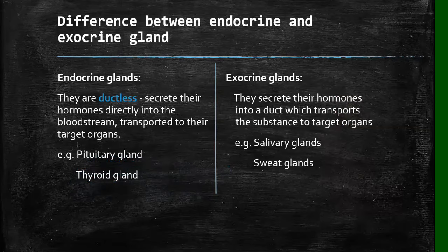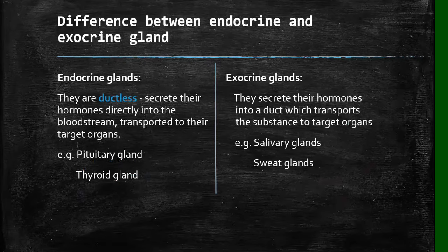Let's look at the differences between the endocrine and exocrine glands. Endocrine glands are ductless, meaning they do not have ducts. Therefore, they secrete their hormones directly into the bloodstream, and from the bloodstream they are transported to their target organs. Examples of endocrine glands include the pituitary gland and the thyroid gland. Exocrine glands, on the other hand, have ducts. They secrete their substances into a duct or tube which transports them to target organs. Examples include the salivary glands and the sweat glands.